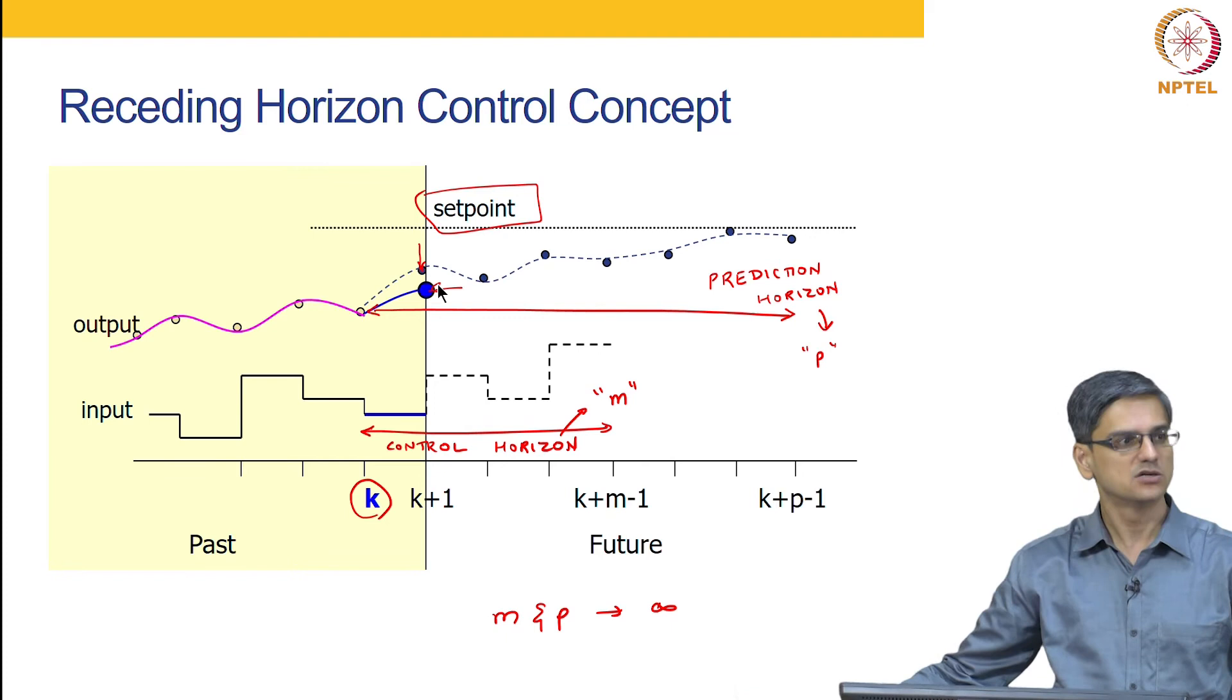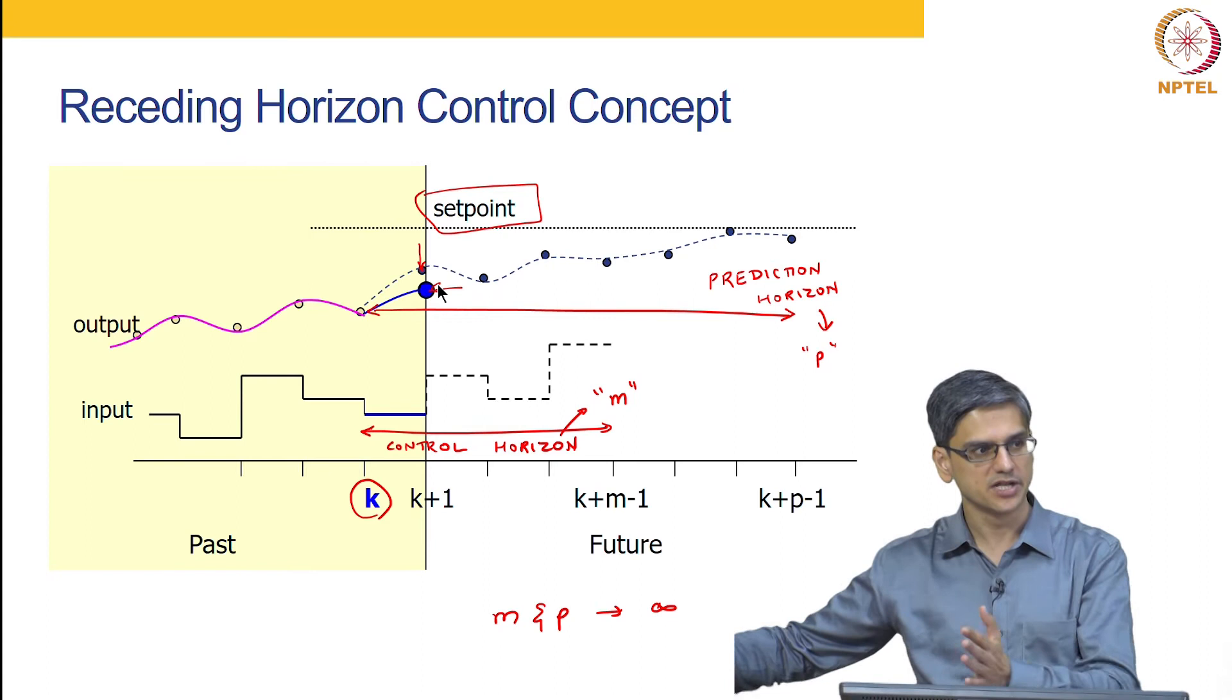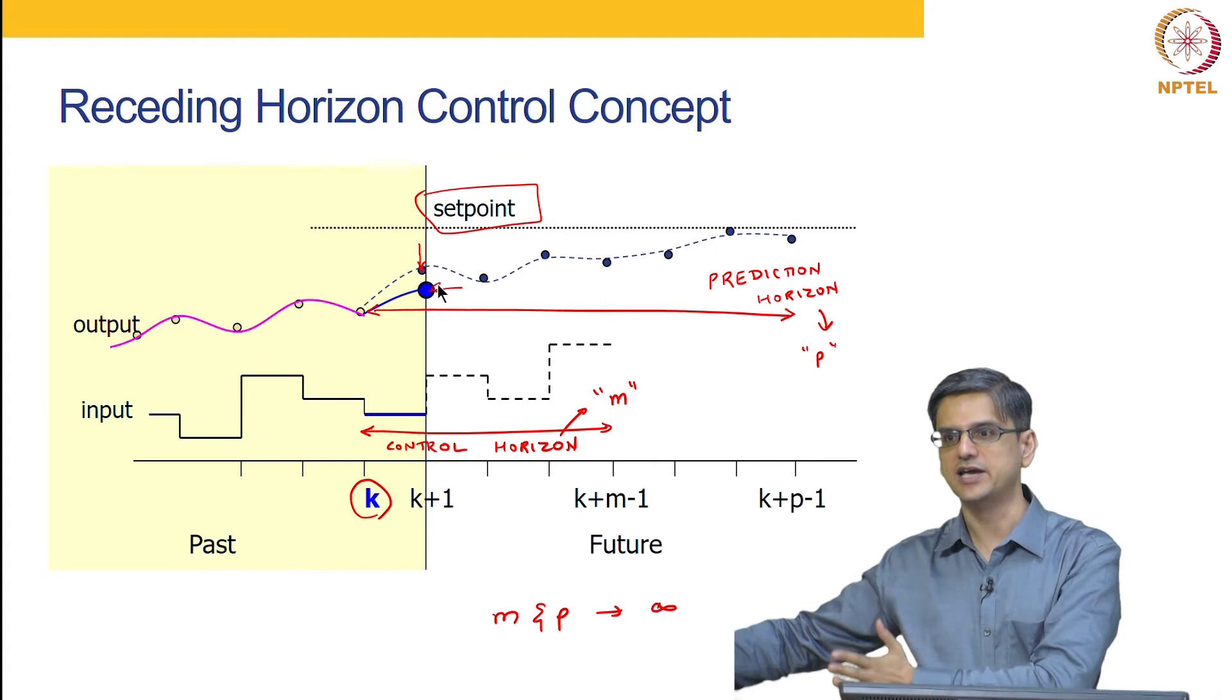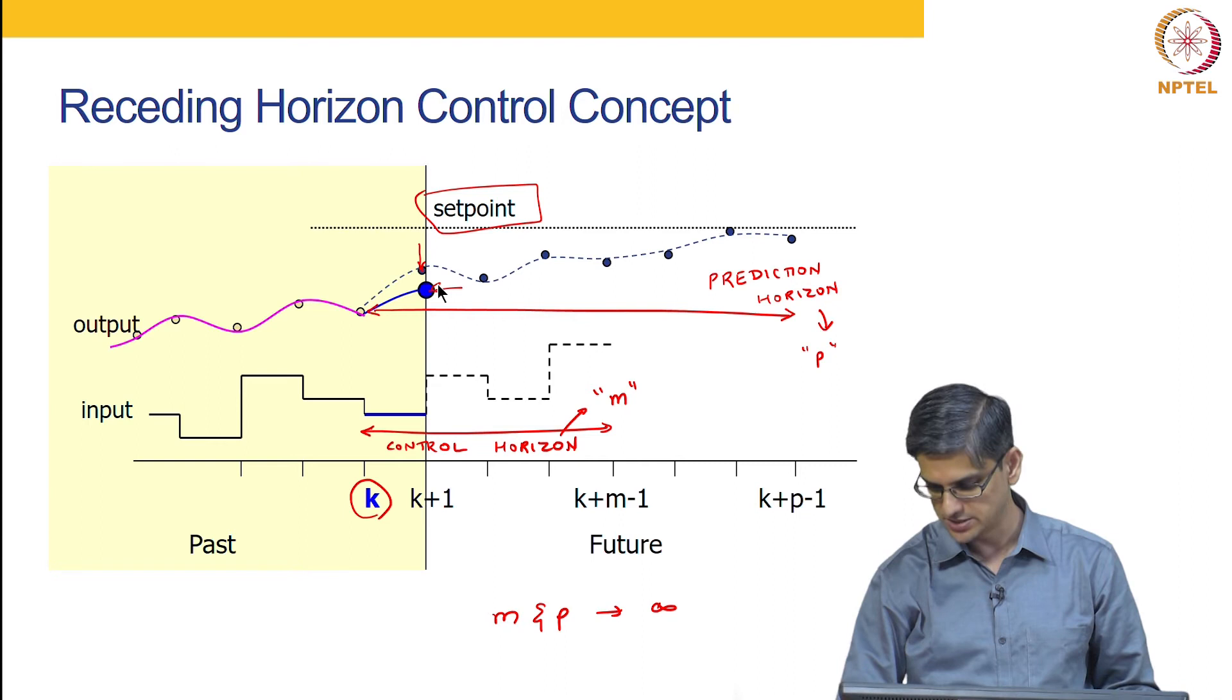So 10 to 15, 11 to 16, 12 to 17, 13 to 18. This 5 time steps into the future is going to be repeated every time we go, we move in the system. So this is what is known as a receding horizon.